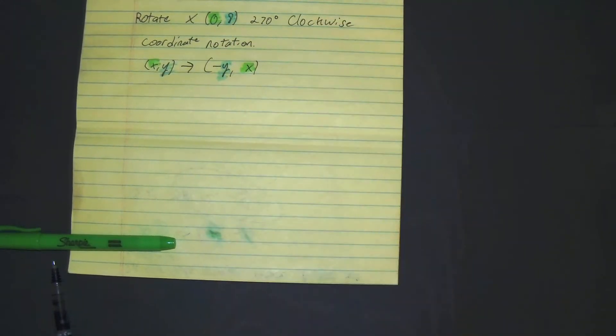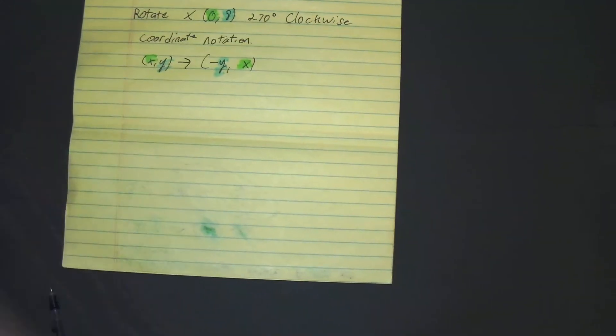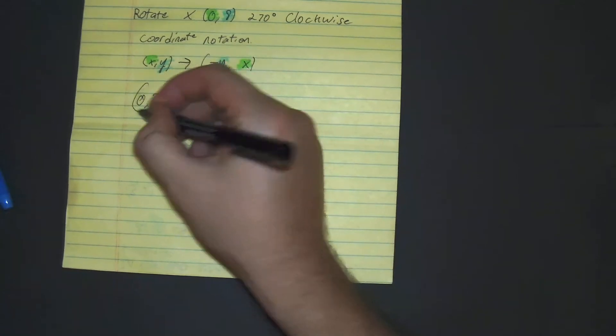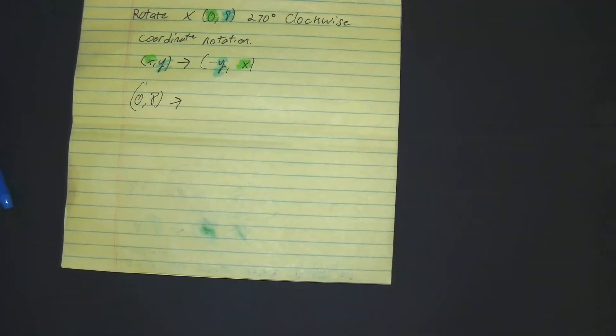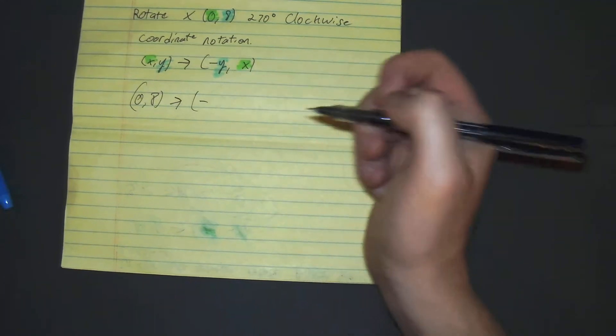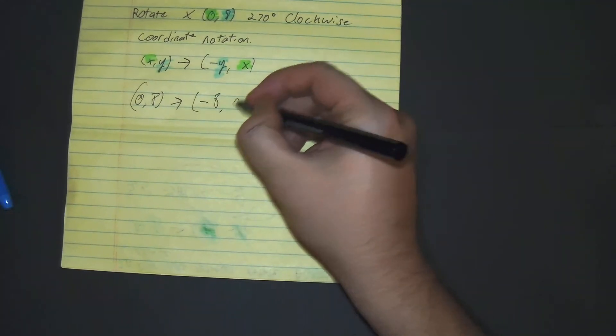I'm going to highlight the negative because that is important for the change in the number. All right, so 0, 8, undergoing the rotation of 270 degrees will become negative 8, 0.